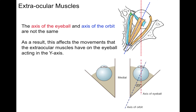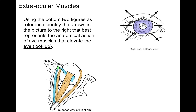The axis of the eyeball, the red line, and the axis of the orbit, the blue line, are not the same. As a result, this affects the movements the extraocular muscles have on the eyeball when acting in the y-axis — looking up or down.